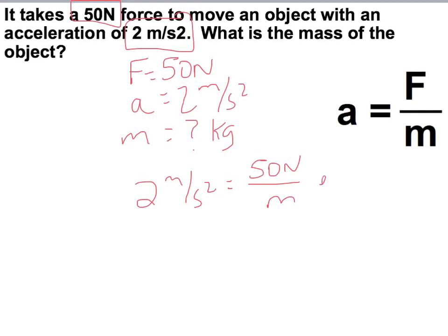We have to multiply both sides by m to dig out that m. And I'm going to drop the units when I rewrite this. We can cancel out that mass. So this gives us 2m = 50. We divide both sides by 2.